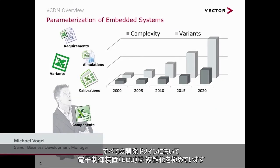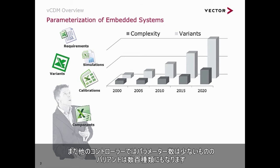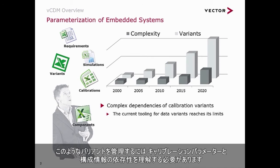Across all domains, electronic control units have reached a significant complexity. A diesel engine control unit has easily more than 60,000 parameters. Other controllers may have less parameters, but are deployed in hundreds of variants, for instance a parking system. Managing these variants requires understanding the dependencies of configuration and calibration parameters.